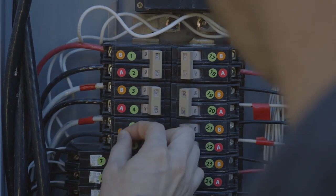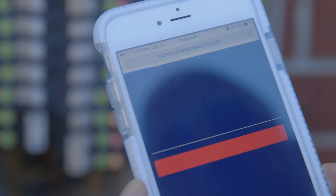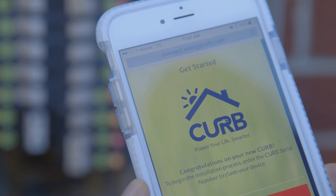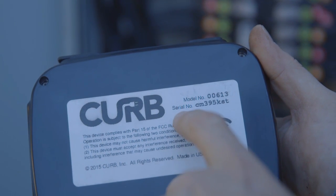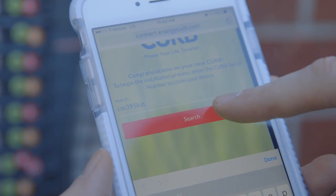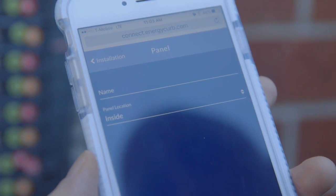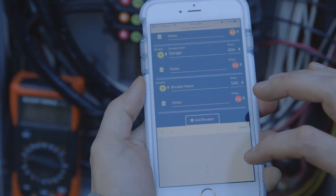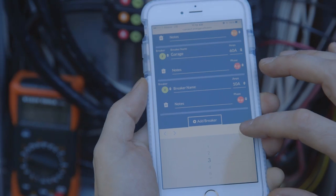On your smartphone, go to connect.energycurb.com. Enter the Curb serial number and click the add panel button. Then fill out the page by entering the breaker number, amps, phase, and name as it appears on the existing panel schedule.